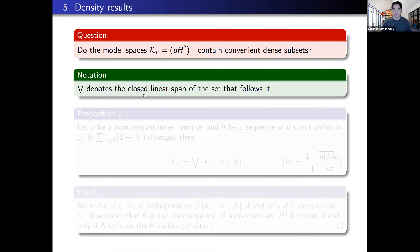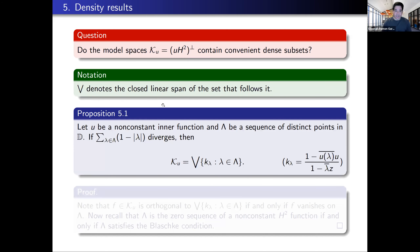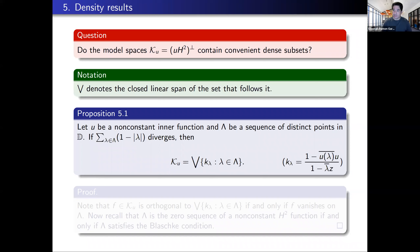We're going to let this big V denote the closed linear span of the set that follows. We've got a proposition: let U be a non-constant inner function, let lambda be a sequence of distinct points in the disk, and suppose that the sequence doesn't satisfy the Blaschke condition — the points don't head toward the boundary sufficiently rapidly. Then the closed linear span of the reproducing kernels corresponding to the sequence lambda equals the entire model space. The reproducing kernel k_lambda takes the form shown here.